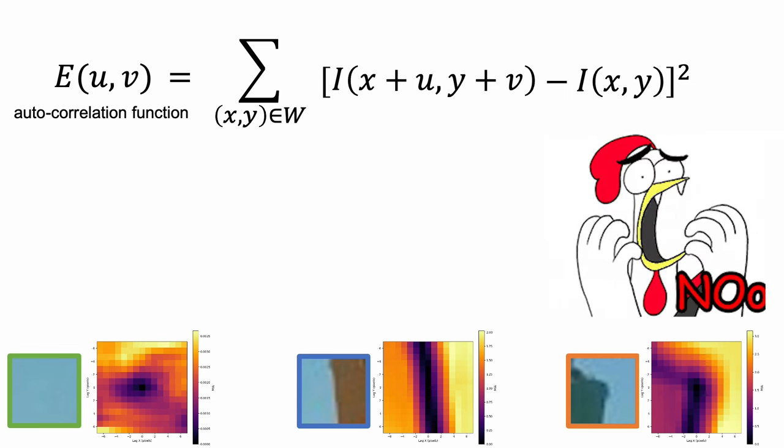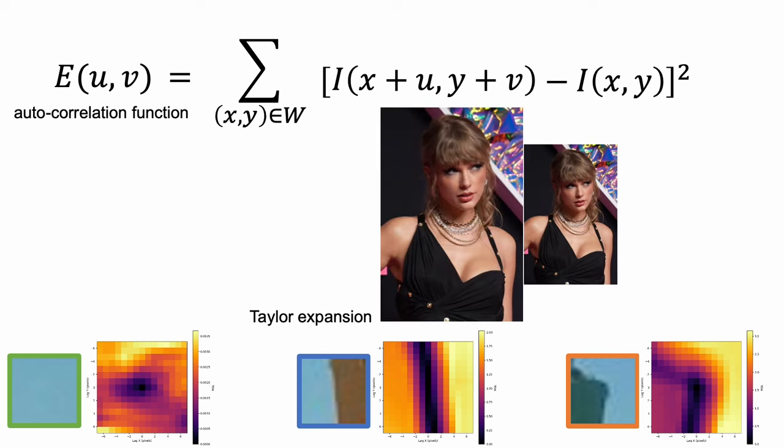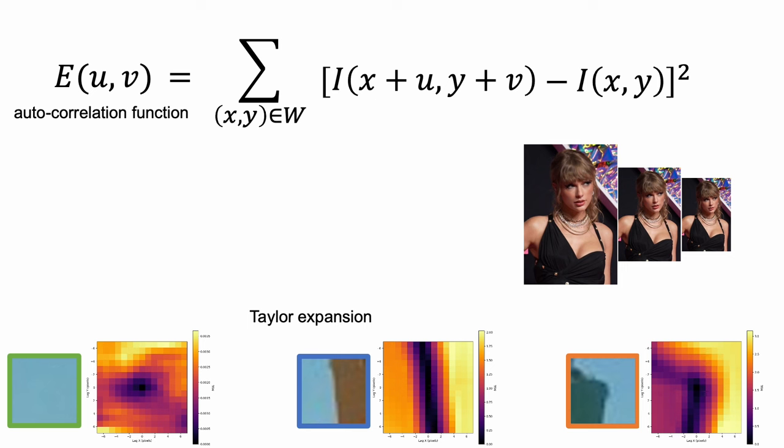But it's expensive to compute this at every pixel location in an image. Fortunately, when the displacement vectors are small, we can approximate the first term using Taylor expansion. Oh, sorry, not this Tyler.